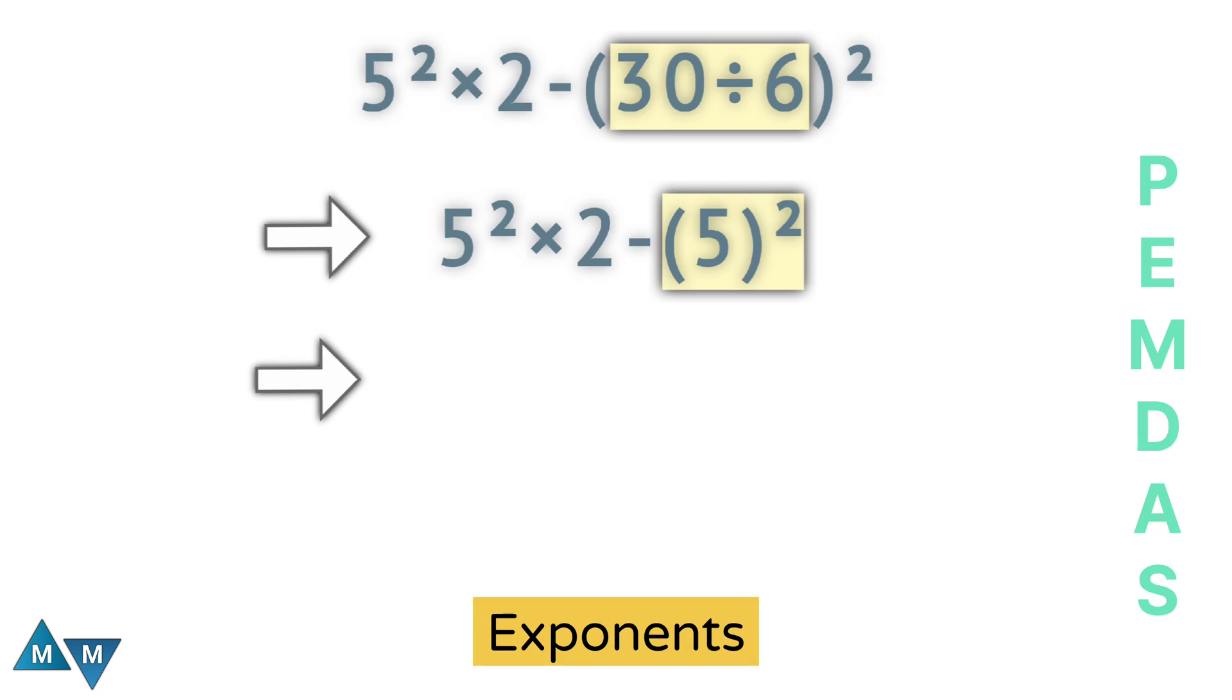Now we have 25 times 2 minus 25. Now, of course, multiplication have a higher priority than subtraction. So 25 times 2 will be our next move, which is equal to 50.